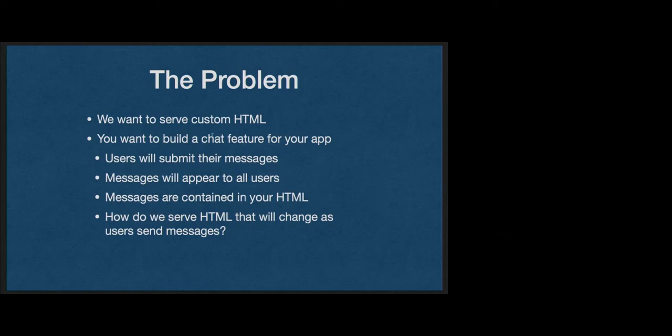Starting right from objective one in homework two, we have to effectively build a chat feature for our app. We have a form, users can type in messages, and every user can see everyone else's messages. Getting the messages from the form is parsing the multi-part form request — that's all of last lecture. That part's in your hands now: parsing the multi-part, getting the message, and even getting the image out of the request.